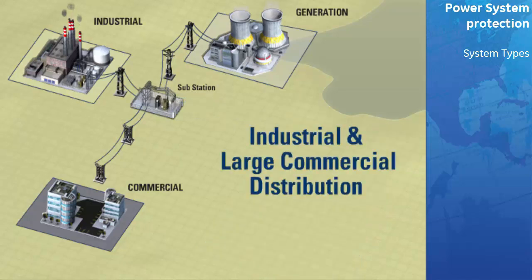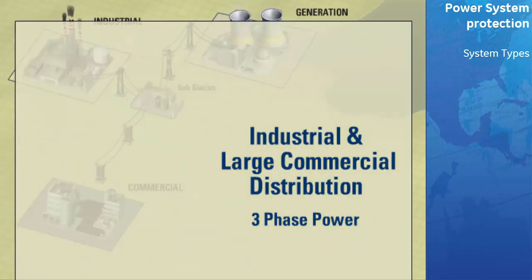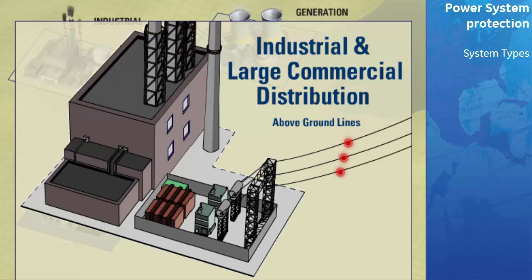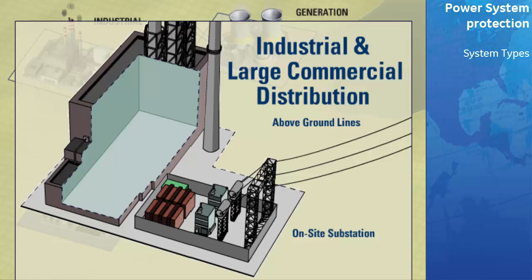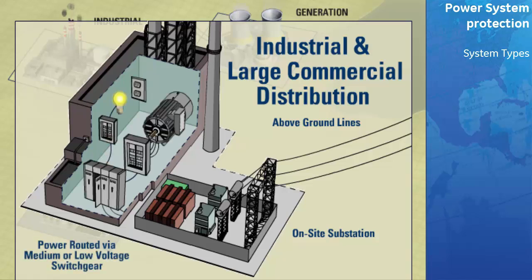The distribution system for a typical industrial or commercial user shares some similarities to that of the residential customer, with the major exception that the power being delivered is usually three-phase. From the substation, the industrial or commercial power lines take the power above or below ground to a large transformer, which steps the three-phase voltage down to a suitable level for the plant or building. For larger commercial or industrial users, this voltage may be in the medium voltage range, in which case there will be an additional substation on site. The power would then be routed from the transformer or transformers via medium or low-voltage switchgear to different areas of the plant or building for further distribution via switchboards and panel boards.